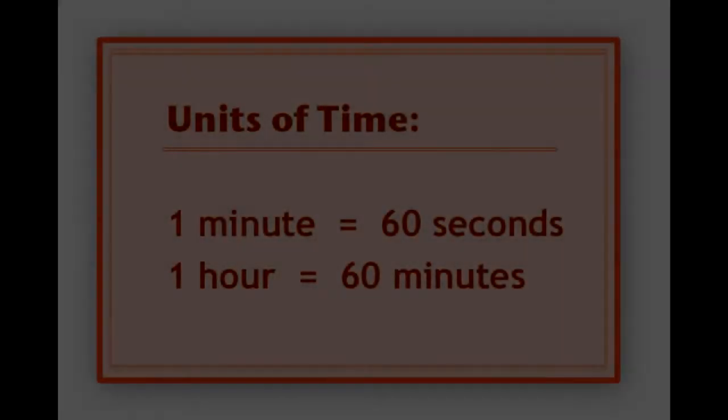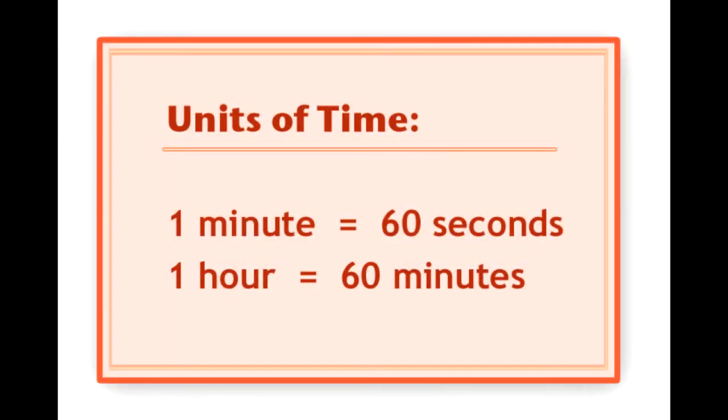How many squares are there on a chess board? Aap chess ki game khayltay hai na, toh woh jub board hoota hai — chess board — uski oopar kitnay squares bane hootay hai? Have you ever noticed? There are 64 squares on a chess board.